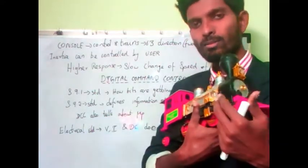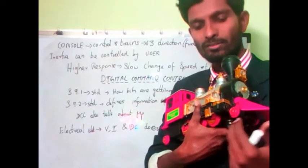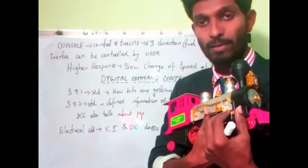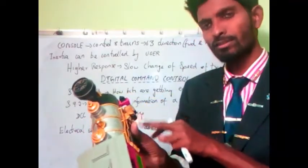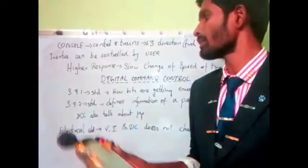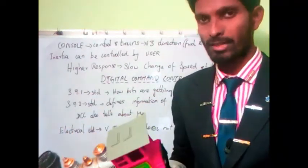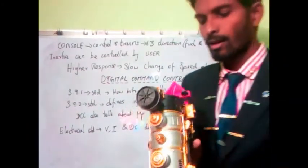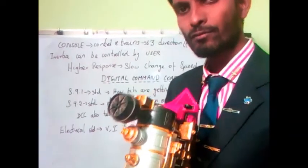So this is the control box, and from this they are able to control the speed of the train. We can send electric signals to reduce the speed. If you go for a higher response, there'll be a slow change. Now we've seen how packets of data are getting transferred, and that is given by the definition of Digital Command Control.